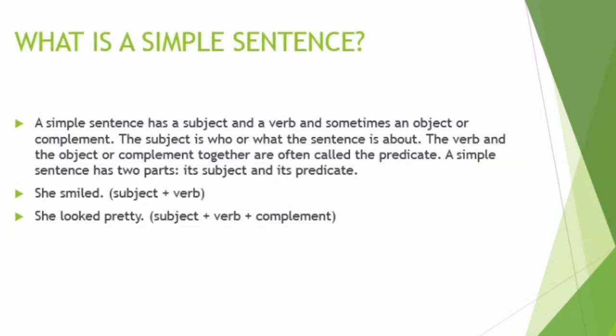A simple sentence has a subject, a verb, and sometimes an object or complement. A simple sentence always has a subject and a verb with a little explanation. The subject is who or what the sentence is about — it can be living or non-living. The verb and object or complement together are called the predicate. So a simple sentence has two parts: the subject and its predicate.